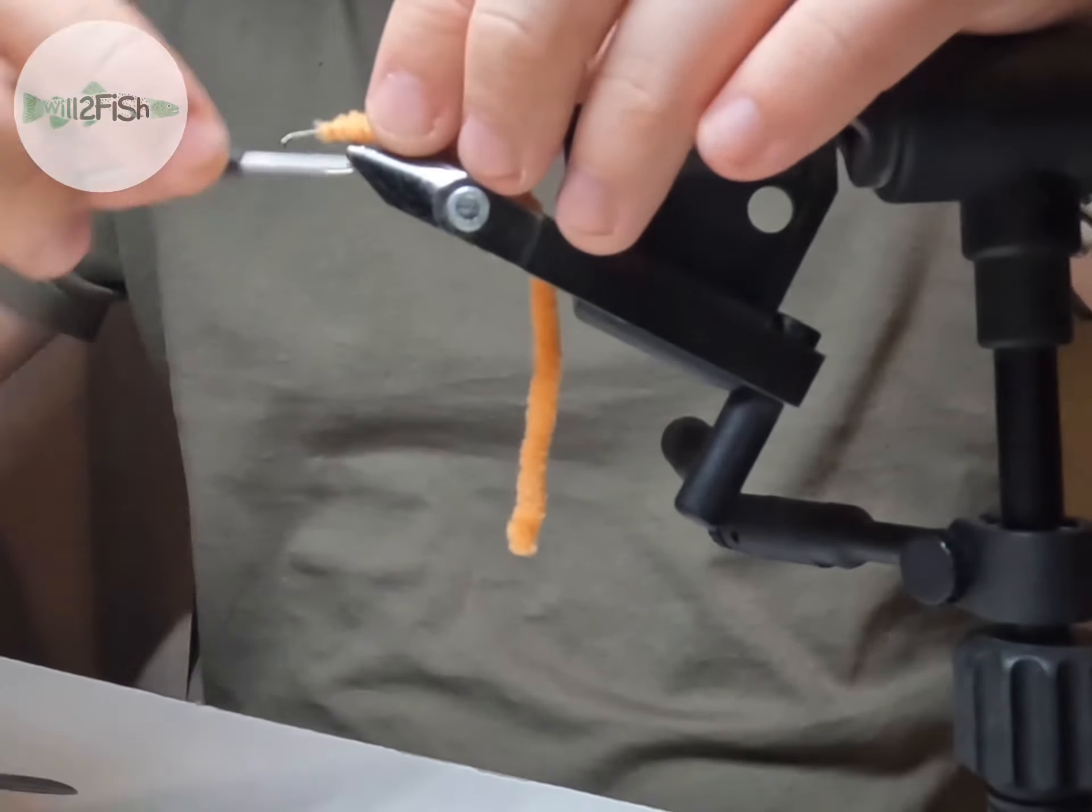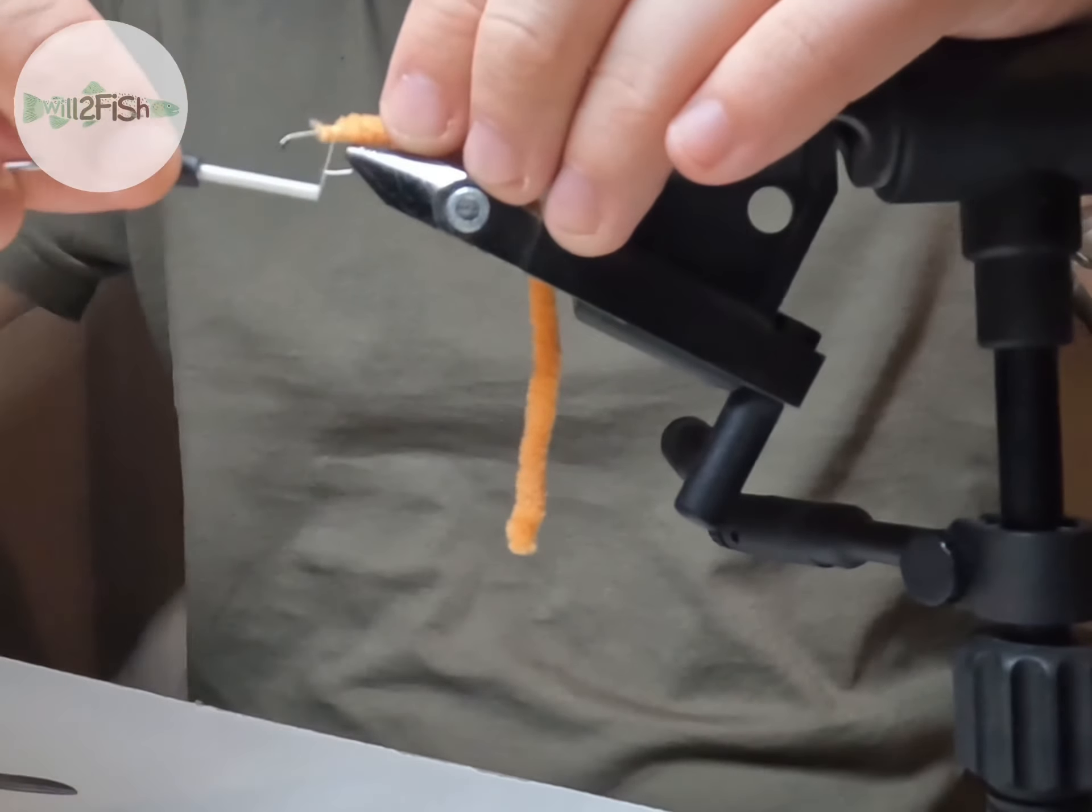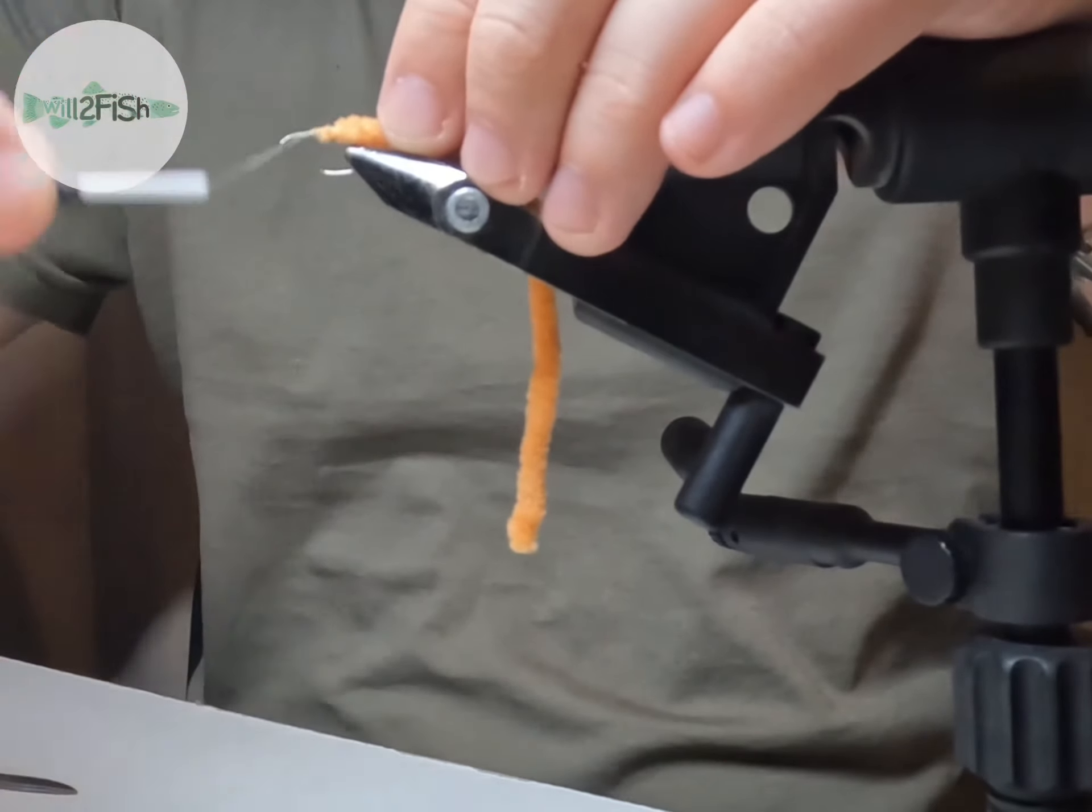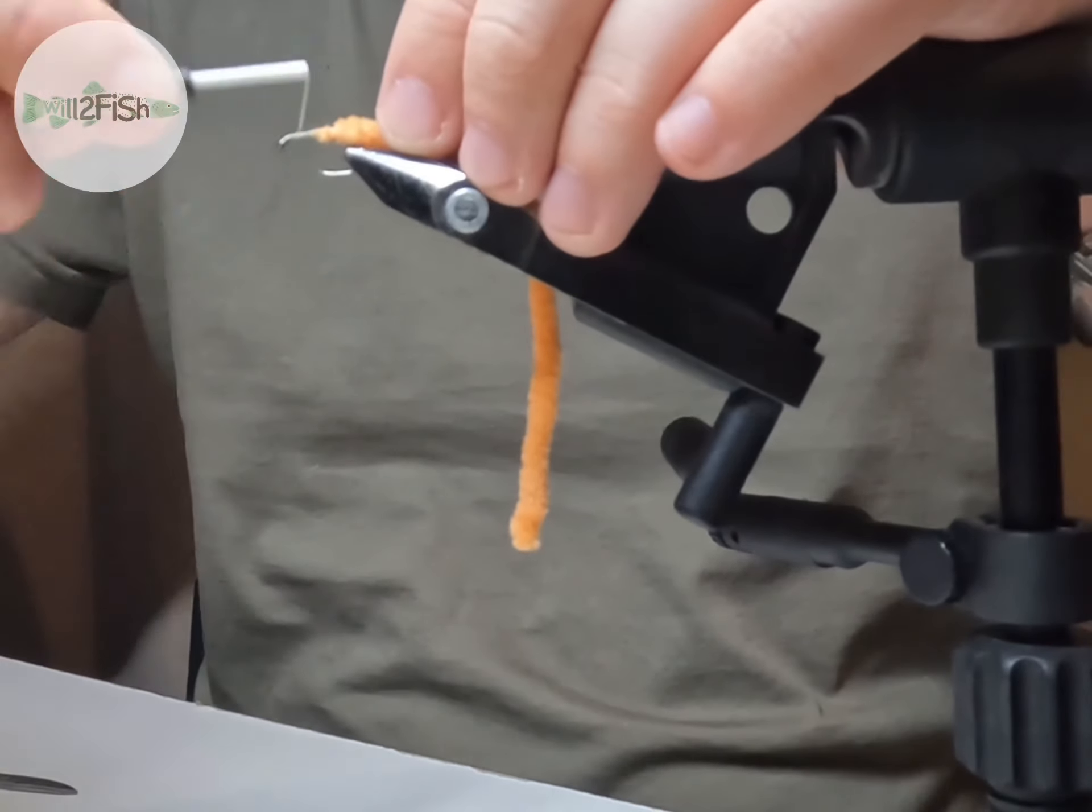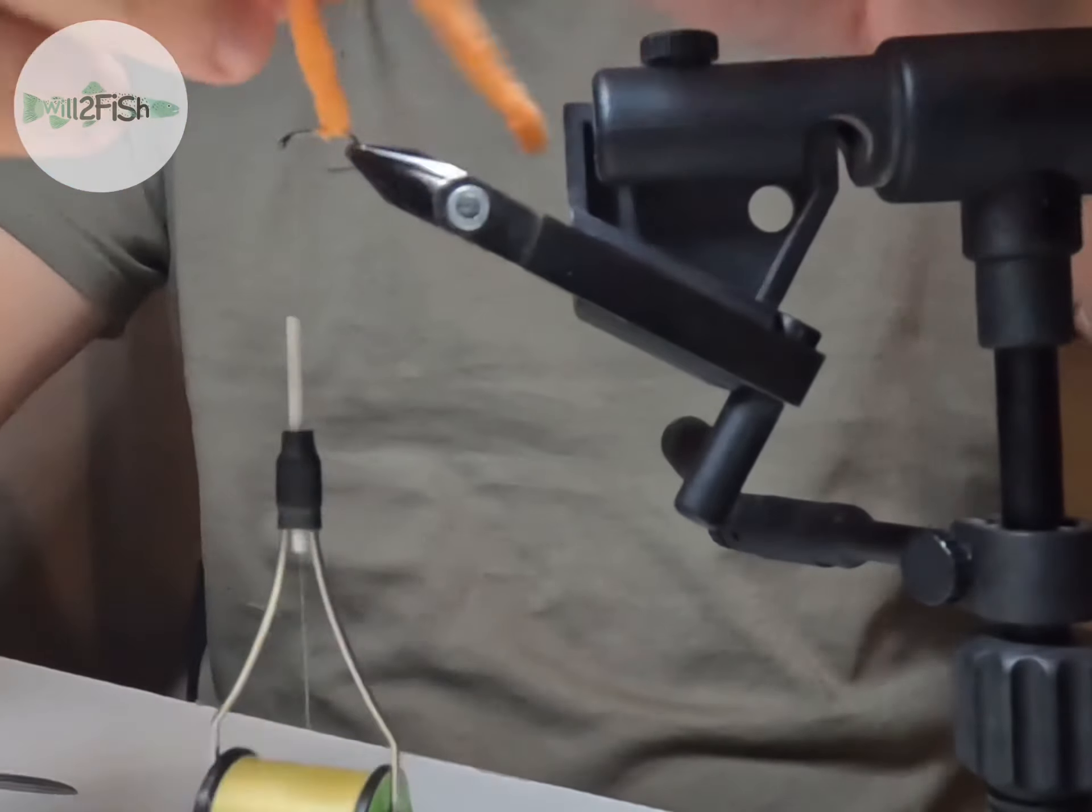So you just want to tie the end at the back of the hook, just secure it in there a few times, and then wind up to the front of the hook by the eye.